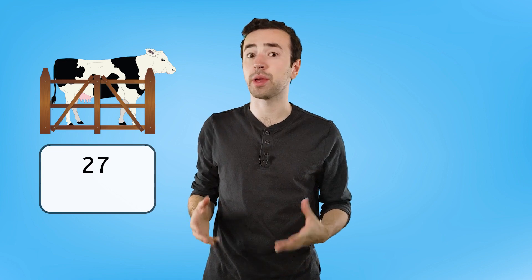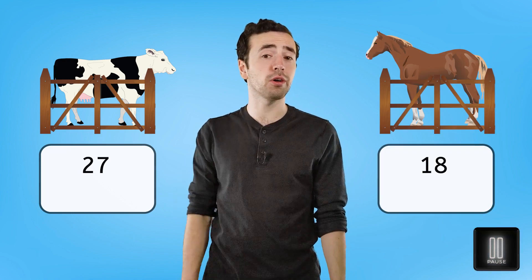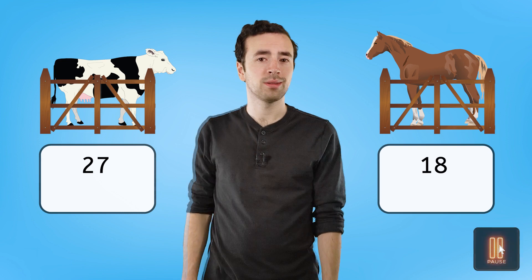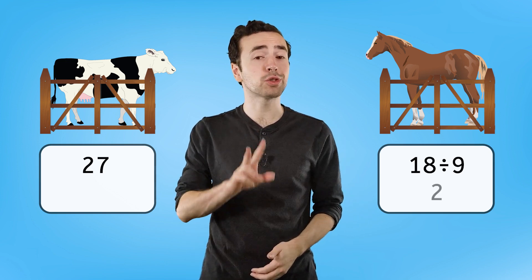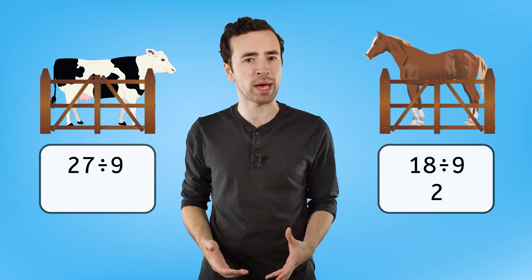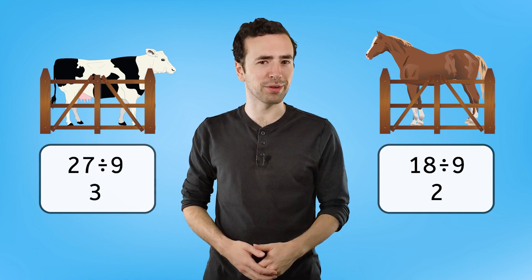This means we can have all the animals corralled into equal groups of 9 in each pen. If we need 9 animals in each pen, can you figure out how many cow pens and how many horse pens we'll end up with? Pause here and solve in your guided notes. 18 horses divided by 9 per pen is 2 horse pens. And 27 cows divided by 9 per pen is 3 cow pens. We're ready to wrangle!